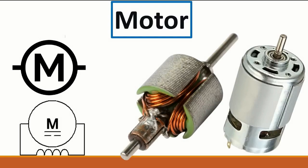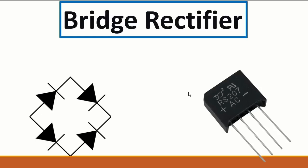Here we have the bridge rectifier, one of the most important components found in every electronic motherboard. Basically, you can find four diodes connected together, or you can find a bridge rectifier module with plus and minus terminals and AC inputs. The purpose of the bridge rectifier is to convert AC voltage into continuous DC voltage. After the bridge rectifier, you will always find an electrolytic capacitor to filter the current.